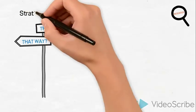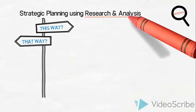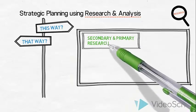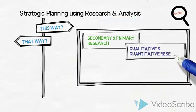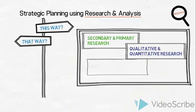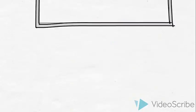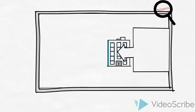When organizations enter into strategic planning, they conduct different types of research and analysis. They might conduct both secondary and primary research. They would consider using qualitative and/or quantitative research and different survey types. They would check the quality of their research data by critically applying the terms validity and reliability.